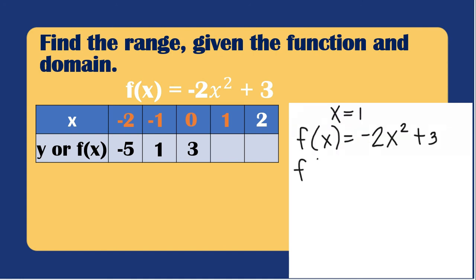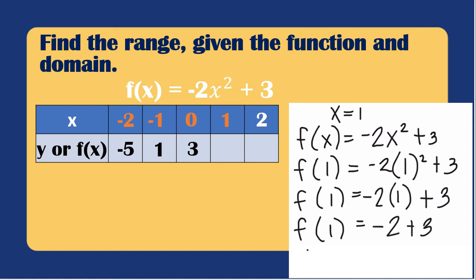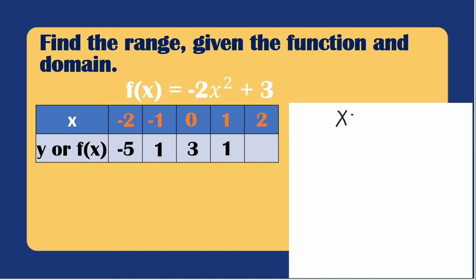If x = 1: f(1) = -2(1)² + 3. First solve 1² = 1 × 1 = 1. Then -2 × 1 = -2, so f(1) = -2 + 3. Unlike signs, subtract: 3 − 2 = 1, copy the positive sign. So f(1) = 1.